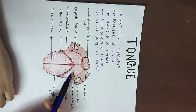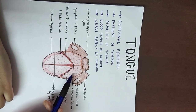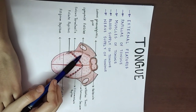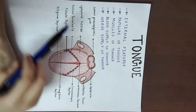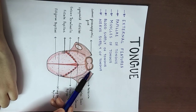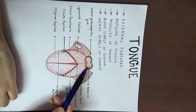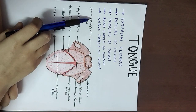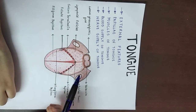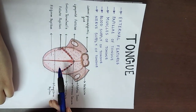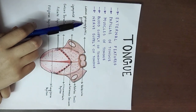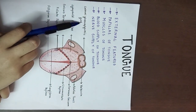In the posterior one-third, there are papillae, taste buds, and lymphoid follicles present. The posterior-most part is where the tongue is connected to the epiglottis via the glossoepiglottic fold — that is, the fold between the tongue (glosso) and the epiglottis.